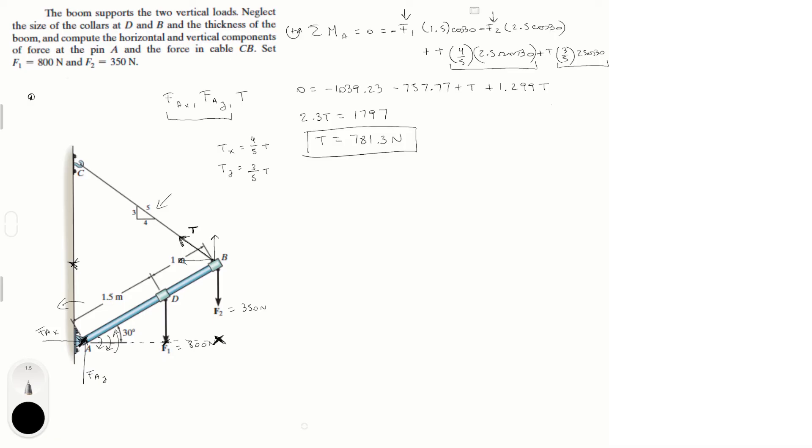So we have T. Now the problem becomes very easy guys. Sum of the forces in the x is equal to zero. And it's equal to the reaction at A, the horizontal reaction at A going to the right, minus the Tx, which we already know is 4 over 5 T. T we already have, we'll plug it in here. And we solve for fAx and you should get that this is equal to 625.04 newtons.